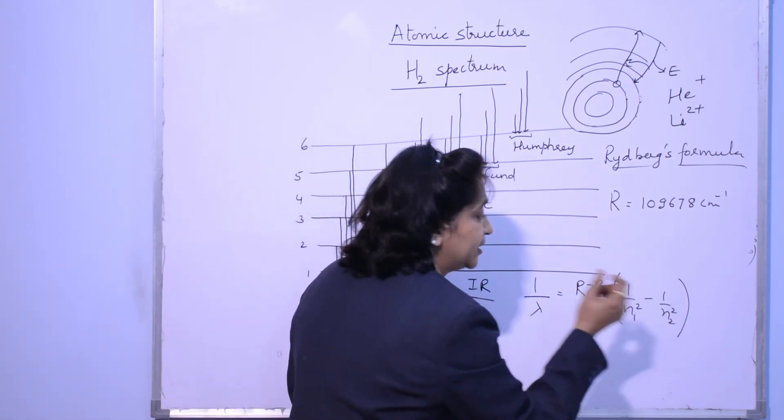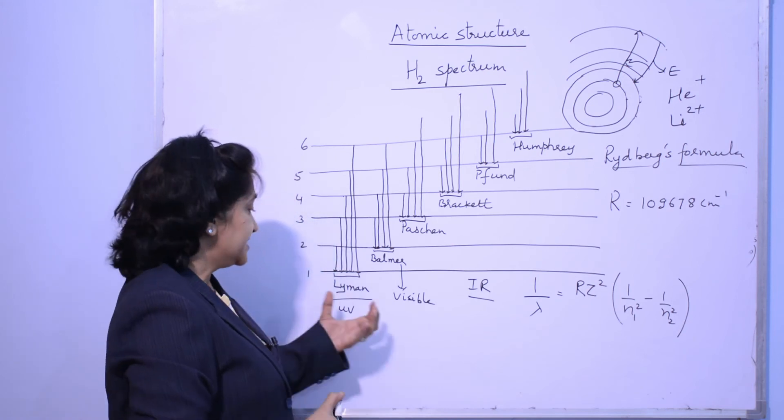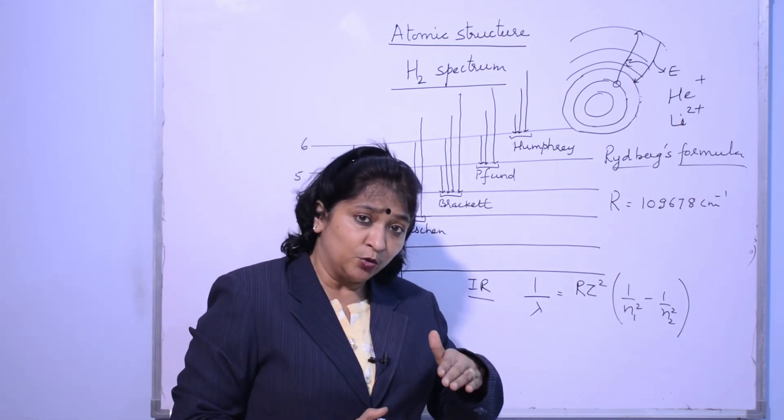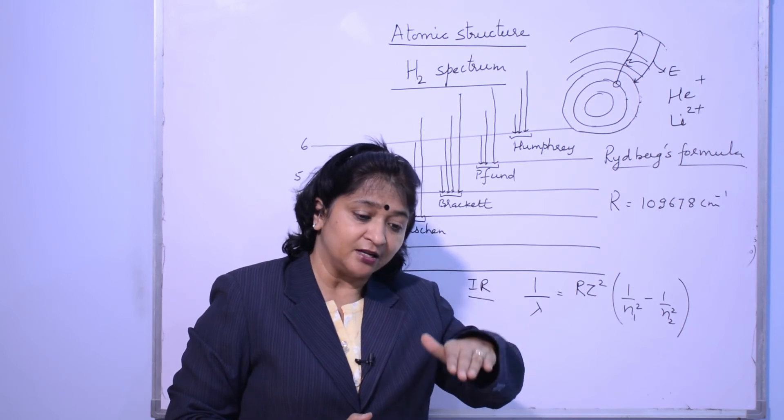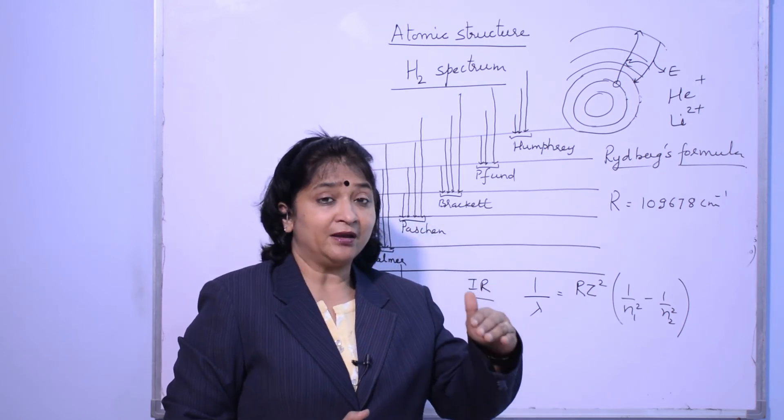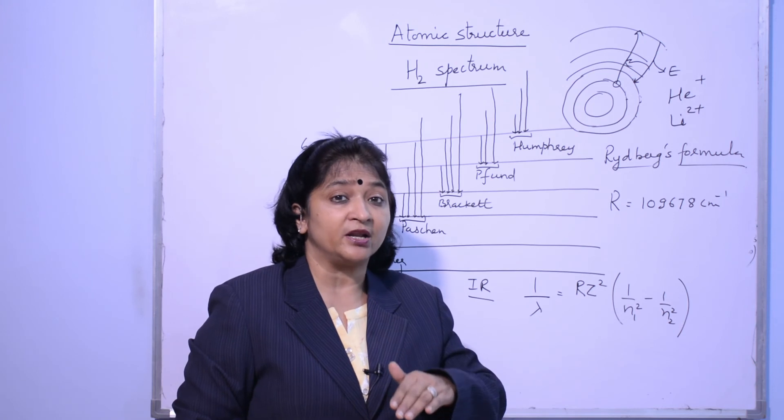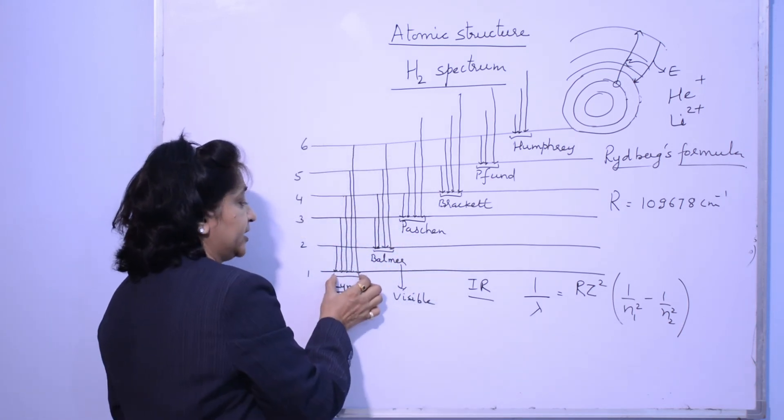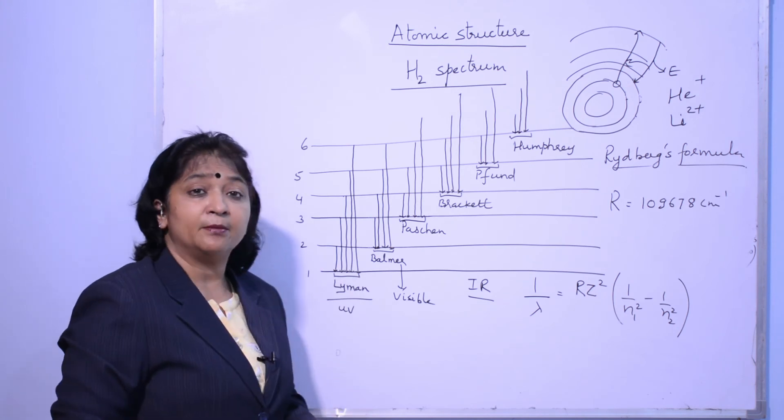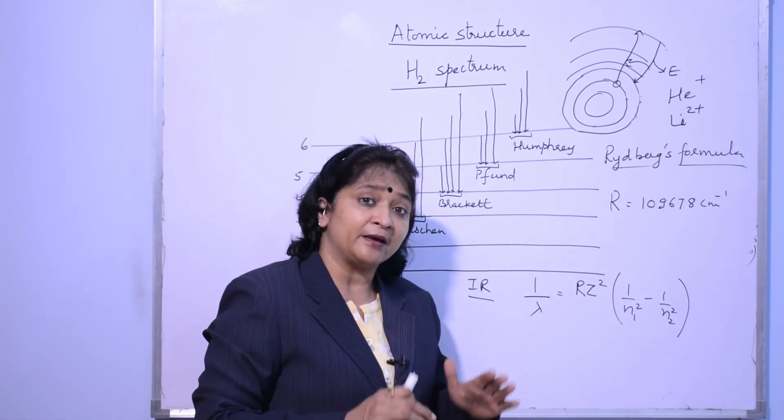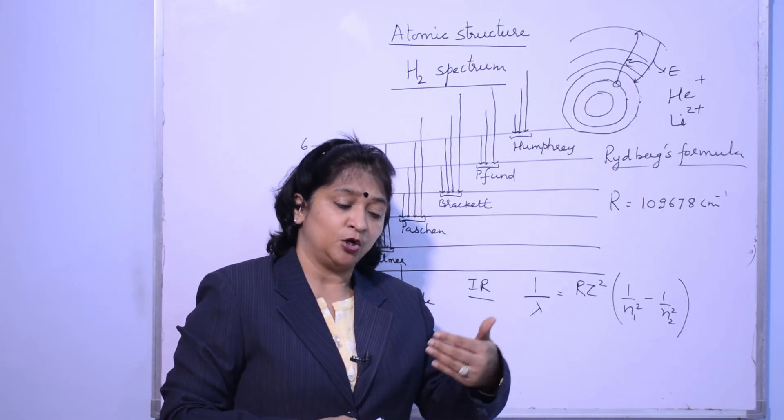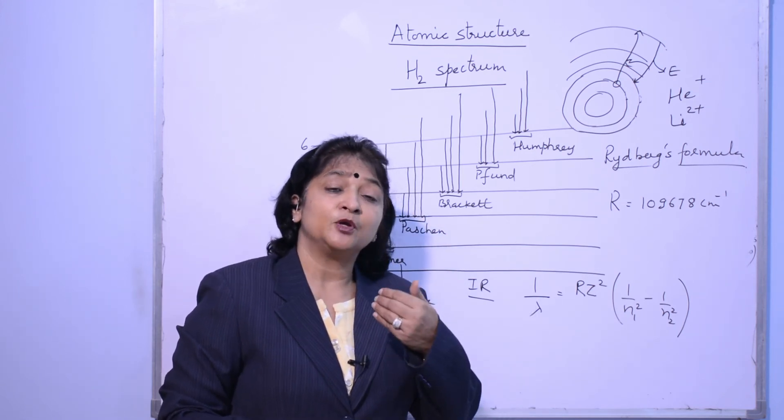So if it is a Lyman series, then N1 is always the value where electrons are finally reaching, where electrons are ultimately falling down. So if it is a Lyman series, then the electrons are ultimately at first level. That means N1's value is always 1 in Lyman series. N2's value is 2, 3, 4, 5, 6 - means 2 and above.